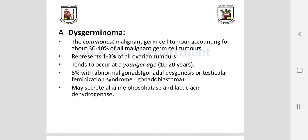Dysgerminoma is the commonest malignant germ cell tumor, accounting for 30 to 40% of all malignant germ cell tumors and 1 to 3% of ovarian cancers, tending to occur at age 10 to 20. About 5% have underlying abnormal gonads — gonadal dysgenesis or testicular feminization syndrome — upon which gonadoblastoma may develop. When diagnosing a girl with androgen insensitivity syndrome, the parents should be informed that early gonadectomy is necessary to prevent development of dysgerminoma.